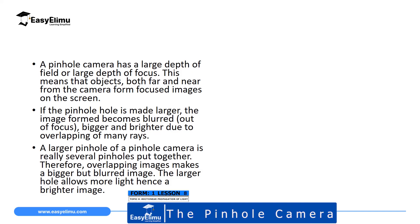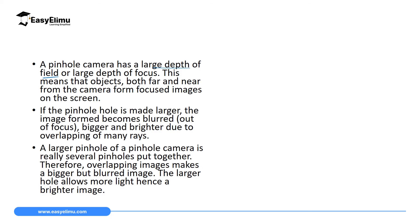The modified pinhole camera has a large depth of field, also called a large depth of focus. This means objects both near and far will form a focused image on the screen with less distortion. In contrast, a lens camera only keeps the target object clear while objects around it become distorted. The pinhole camera does not distort the image.